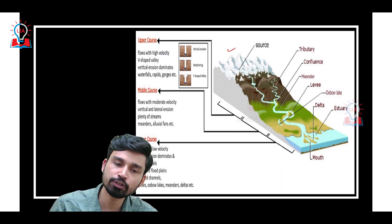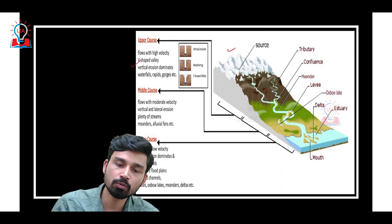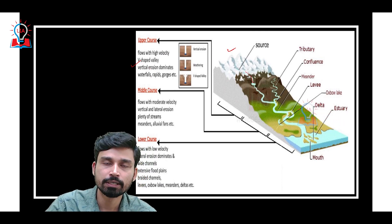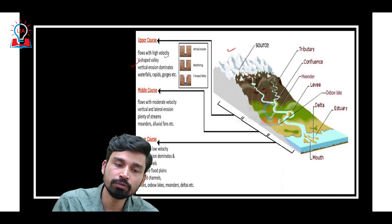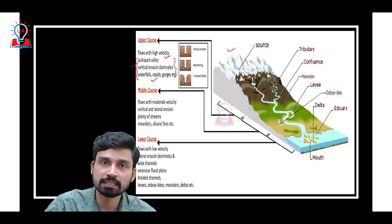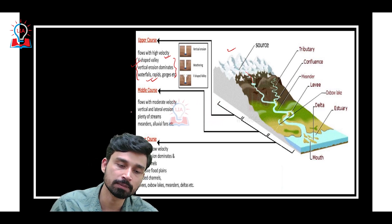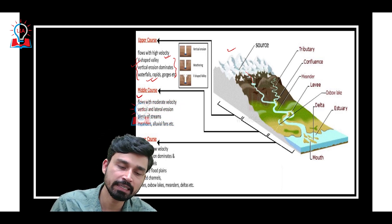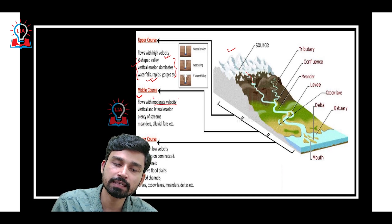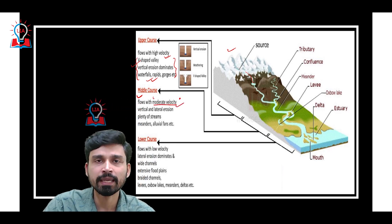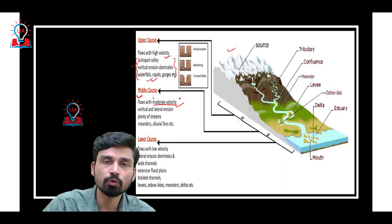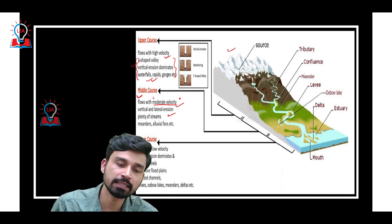The upper course is when the river flows in mountainous areas. Since there is a steep gradient, the river flows with high velocity and forms lots of erosional features such as valleys, waterfalls, rapids, and gorges. The river then enters the middle course as it comes out of the mountains, where there is a decrease in gradient and the river flows with moderate velocity. Here, both vertical erosion and lateral erosion occur.